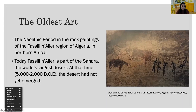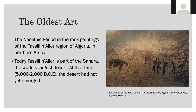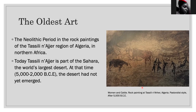This shows daily life of the Neolithic period in the rock paintings of the Tassili n'Ajjer region of Algeria in northern Africa. You can see cows and figures that appear to be women. Yes, it is a painting on the rock.